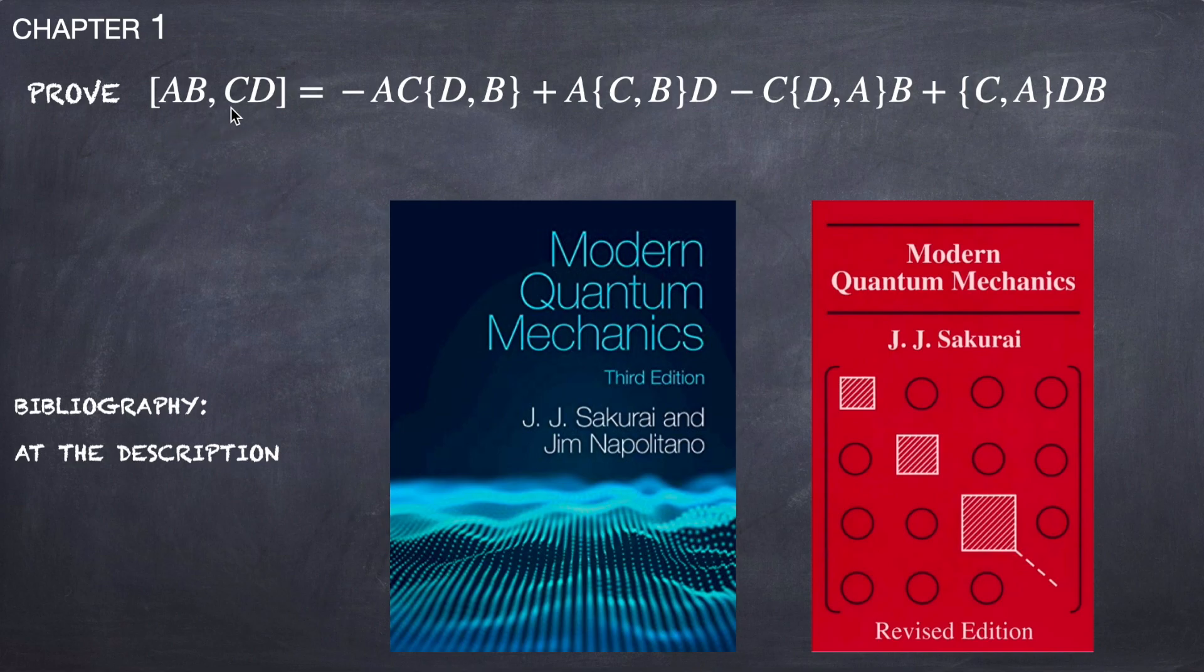We need to prove that the commutator of AB and CD is equal to the right hand side of this equation, every term containing an anti-commutator.